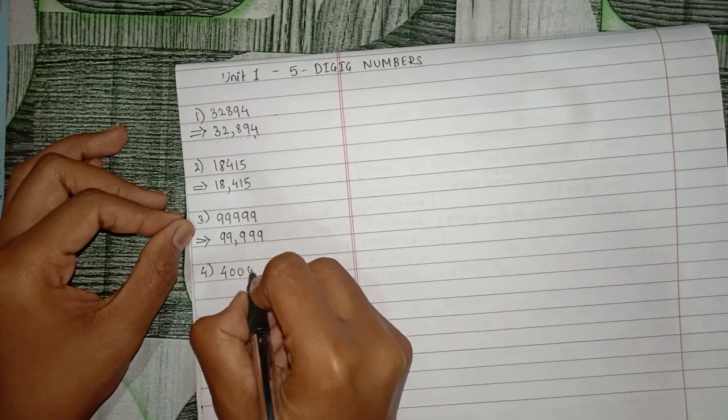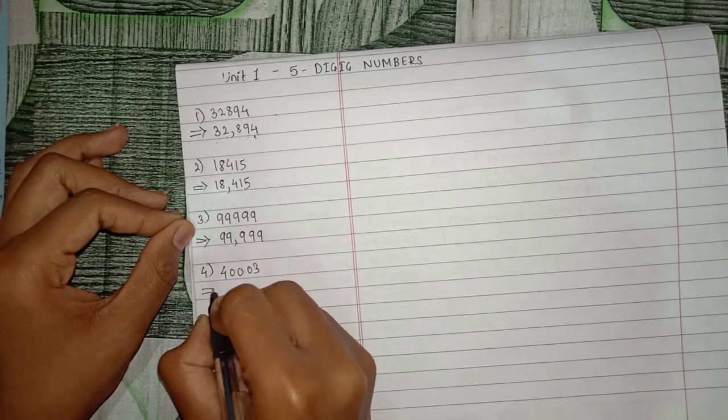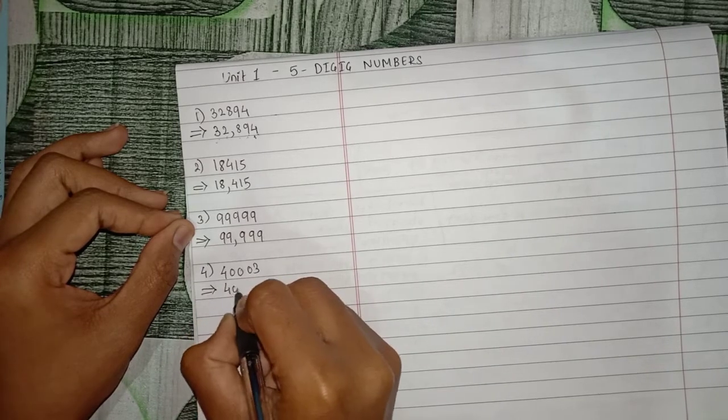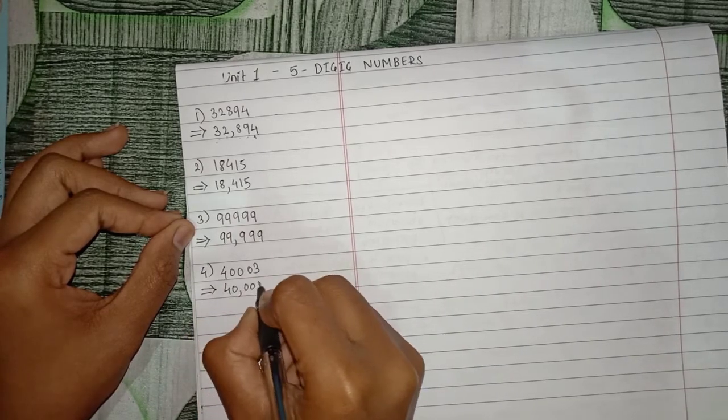Similarly with the fourth question: 40003, then forty thousand and three.